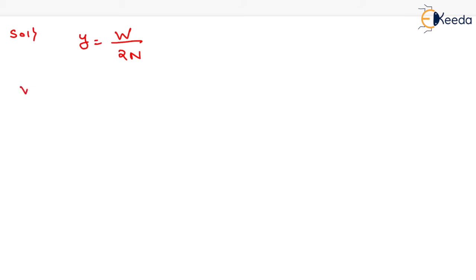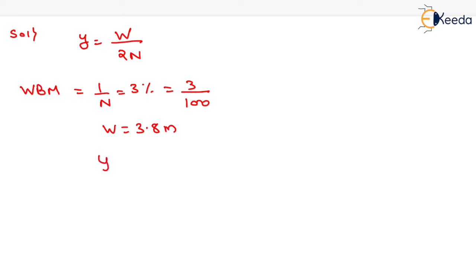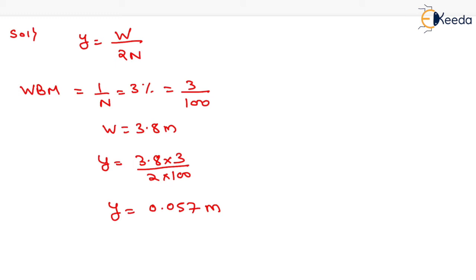Now for water-bound macadam in case of heavy rainfall area, the slope is generally equal to 3%, so we can determine the value of 1/n as 3/100. Putting the value of 1/n as 3/100 and width of pavement given as 3.8 meter, the value of y will be equal to 3.8 × 3 / (2 × 100). On solving this, we get the value of y as 0.057 meter. That will be the height of the crown of straight line Camber in case of water-bound macadam in heavy rainfall area of major district road.